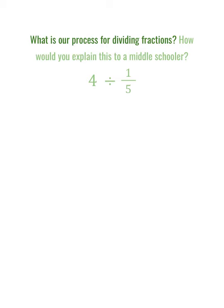Dividing fractions can be a complicated process to see. Probably the easiest habit is flip and multiply for the divisor. One thing to think about: the answer to this one is 20. When you divide — 12 divided by 4 equals 3 — the answer times the denominator brings you back to the numerator. So when you divide by a fraction that's less than 1, as 1/5 is less than 1, you're going to end up with a bigger value.